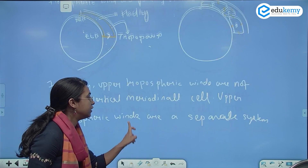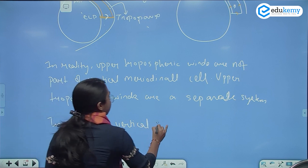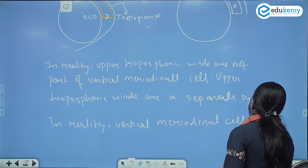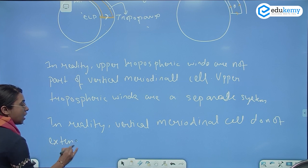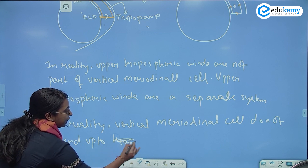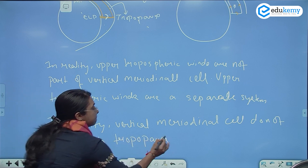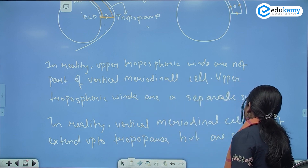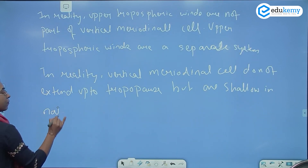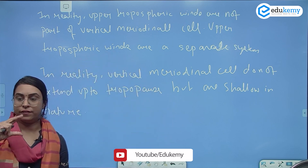In reality, the vertical meridional cells do not extend up to the tropopause — they are shallow in nature. The cells do not extend up to the entire tropopause; they are very shallow.